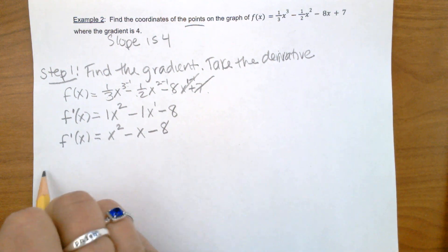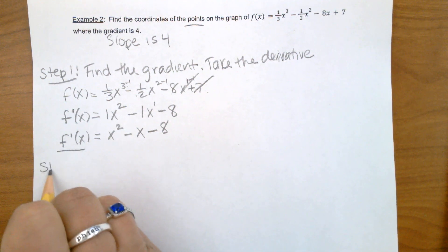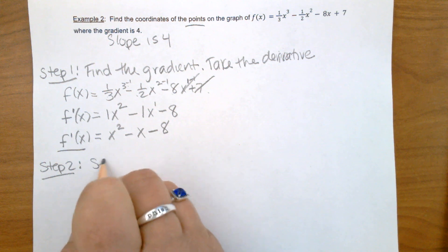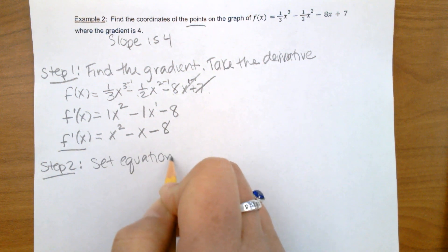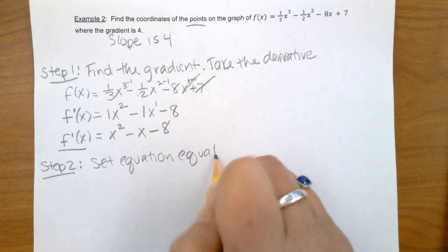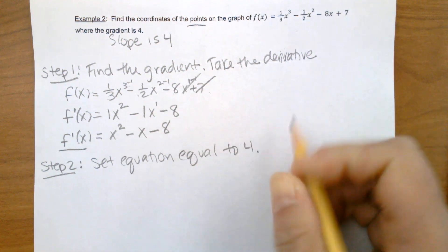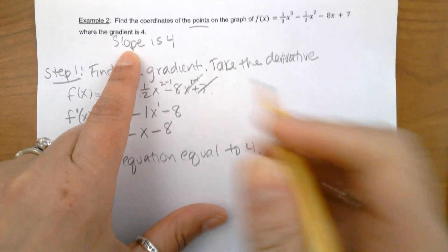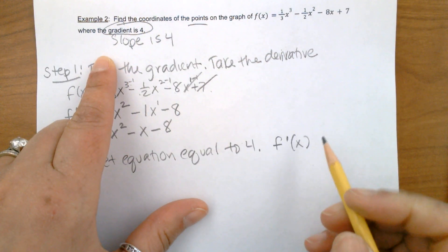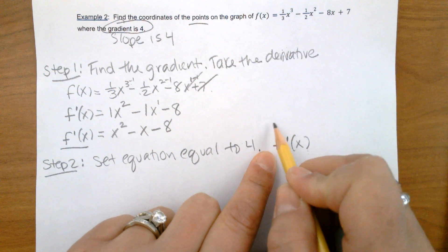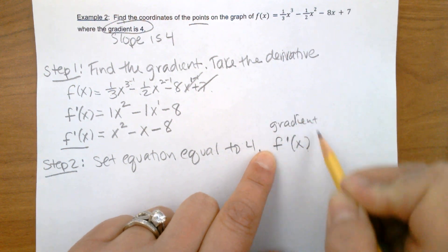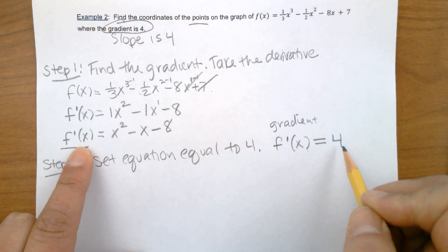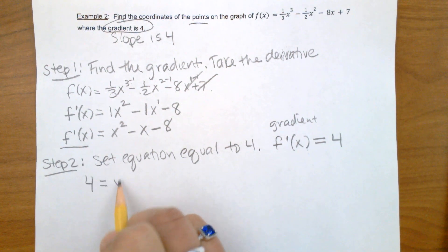Step 2 is to set the equation equal to 4. The reason why: f prime of x — the slope, which is the gradient — they said is 4. So I have to remove the f prime of x and in its place put a 4.